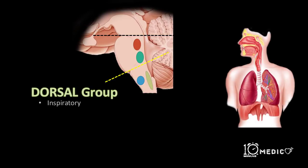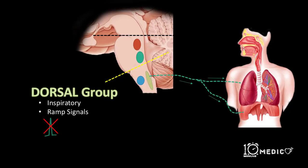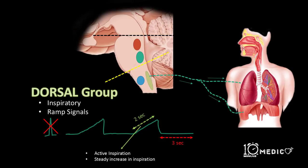The dorsal group of neurons are concerned mainly with inspiration by supplying the diaphragm and the external intercostals. They produce a peculiar signal called the ramp signal. The ramp signals are not sharp signals; rather they are graded signals which increase in intensity for a period of around 2 seconds and stop suddenly for a period of 3 seconds. The slow increase helps in graded contraction of the diaphragm which causes steady and active inspiration.